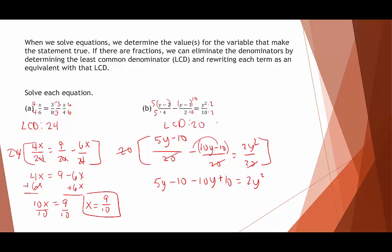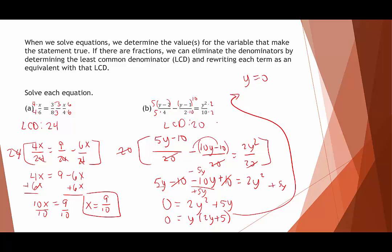This equation is quadratic, so we set it equal to 0. Moving everything to the other side: the minus 10 and plus 10 cancel, and 5y and negative 5y give minus 5y, so we get 2y squared plus 5y equals 0. Factoring out the GCF: 0 equals y times (2y plus 5). Setting each factor to 0 gives y equals 0 and y equals negative 5 over 2. This equation has two solutions: negative 5 over 2 and 0.